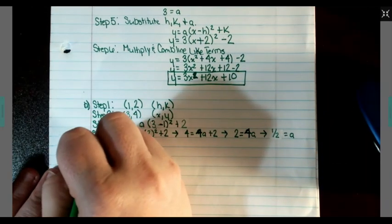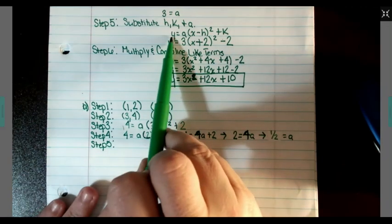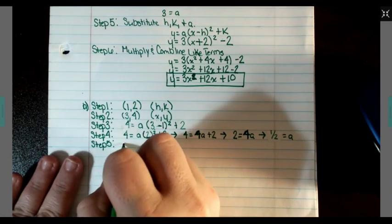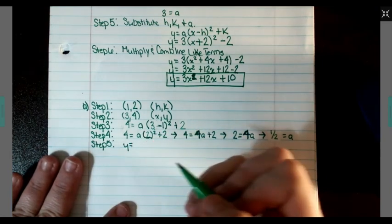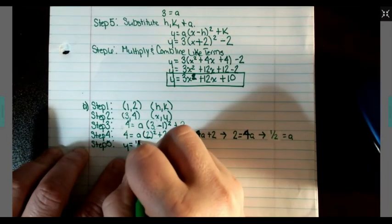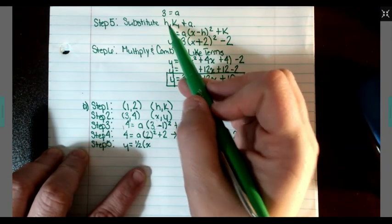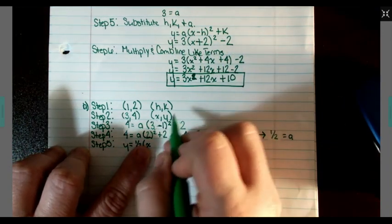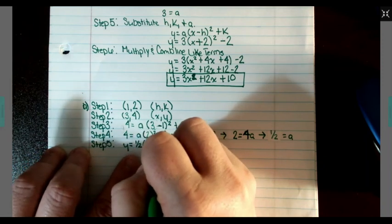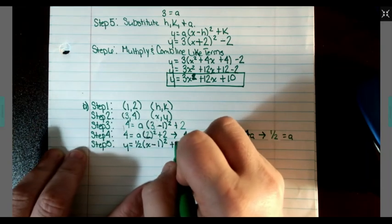Step 5: Step 5 says substitute K, X, and A into this equation right here. So we'll have Y equals, my A is going to be 1 half, my H is going to be negative 1, so minus 1, and then my K is plus 2.